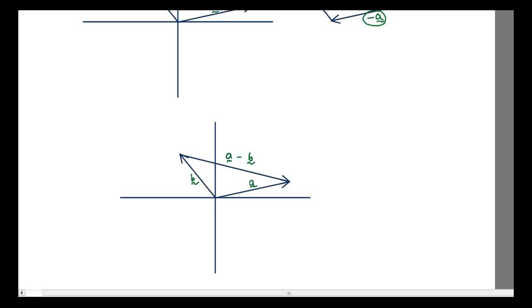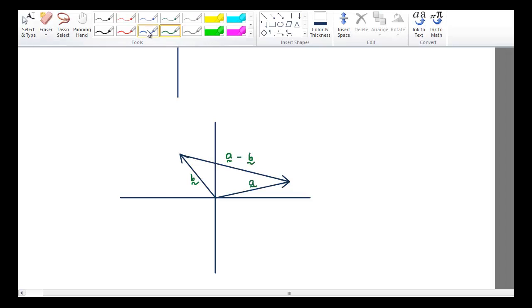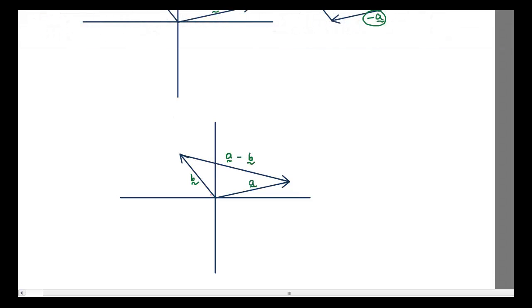Because if you imagine vector B going the opposite way. So if I have minus B, then this will be going that way instead of that way. It will be going this way, minus B plus A.